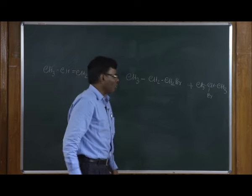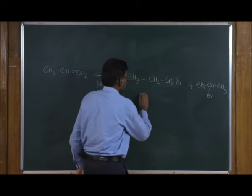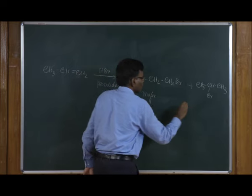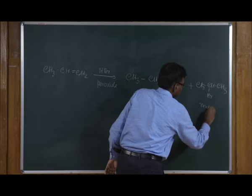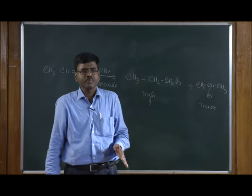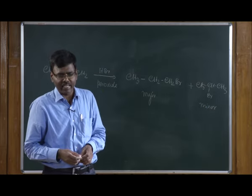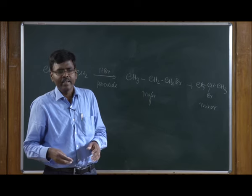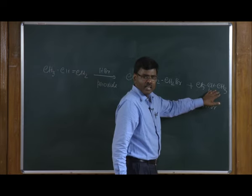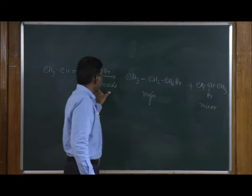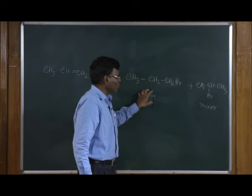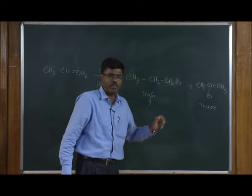You get a mixture of compounds: one is the major product and the other is the minor product. In the electrophilic addition reaction, the secondary (more substituted) product is the major product. However, when you carry out the reaction in the presence of peroxide, the primary product becomes the major product and the secondary becomes the minor product.